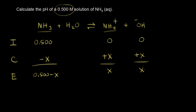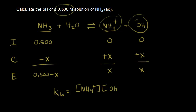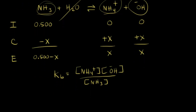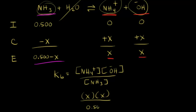Now we write the equilibrium expression: KB = [NH4+][OH⁻] / [NH3], leaving water out. Plugging in the equilibrium values: KB = (X)(X) / (0.500 − X). At equilibrium, [NH4+] = X, [OH⁻] = X, and [NH3] = 0.500 − X.